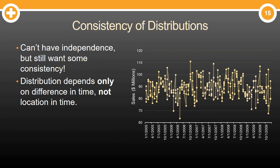The idea of stationarity revolves around the idea of consistency. In time series, we don't have independence — you should go back and watch some of the previous videos in this series about the difference between time series data and cross-sectional data. We need consistency to be able to build models, and here we're talking about consistency of distributions. The distribution of certain windows of time in your data only depends on that window of time, not on the location in time.